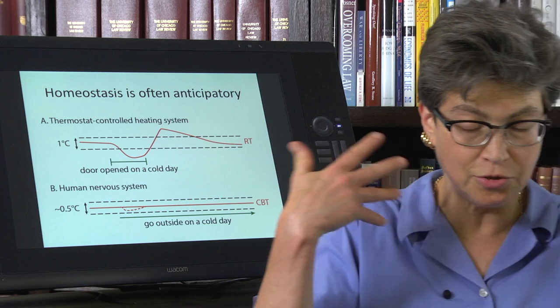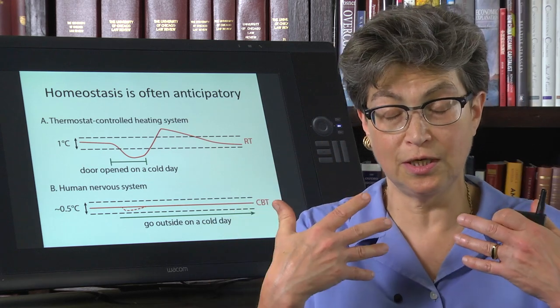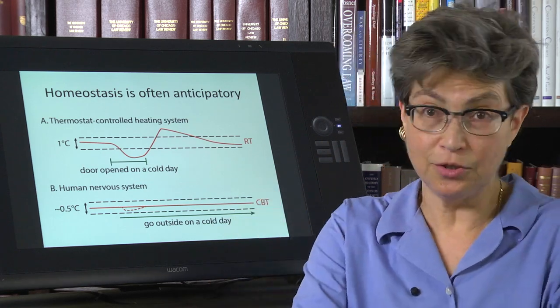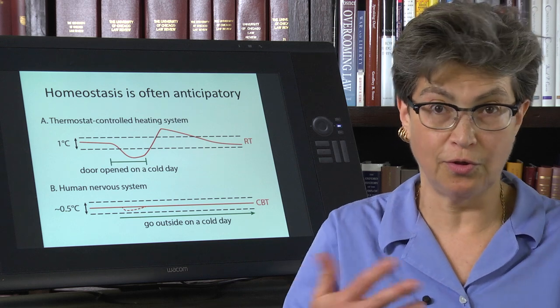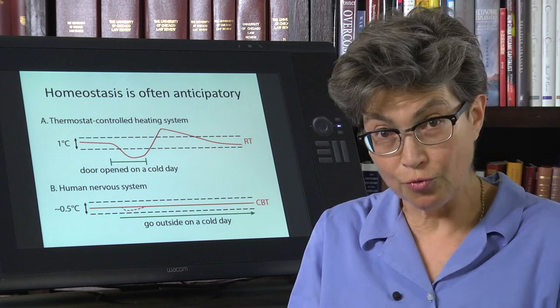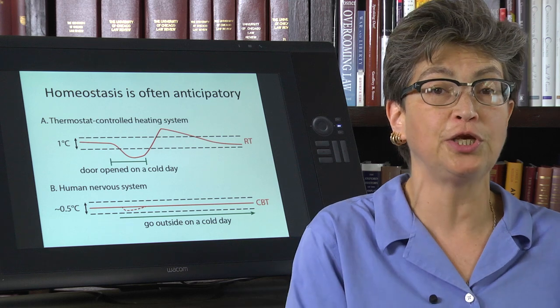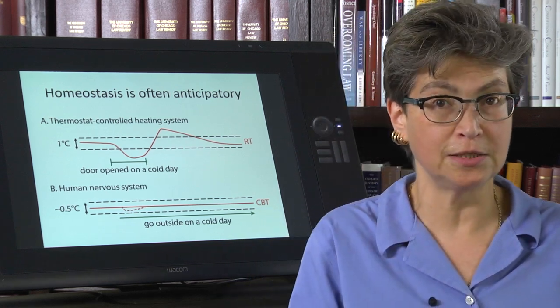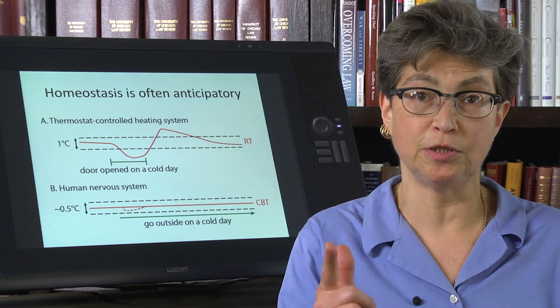And that's because you get all these signals. You get signals from your eyes, cognitive signals, memory kicks in, and your skin is filled with all these temperature sensors. So you know that it's cold out there and you prevent the change before it ever happens. So homeostatic systems, because the brain is smart, are anticipatory.